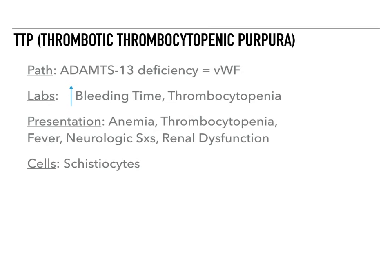The next disease is TTP, or thrombotic thrombocytopenic purpura. The pathology here is that there's a deficiency in something called ADAMTS13, which means that you have more von Willebrand factor. On labs, you see an increased bleeding time because platelets are being destroyed. There's a thrombocytopenia, which causes an increased bleeding time.